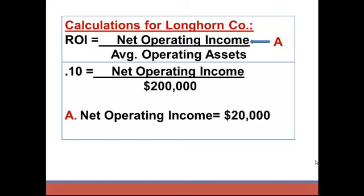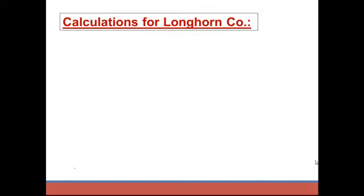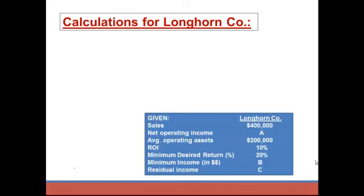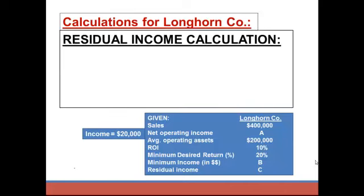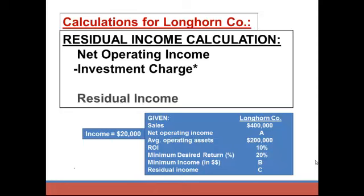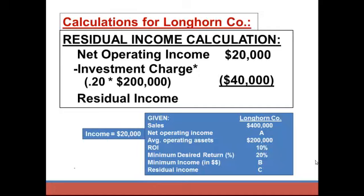Now to solve for B and C — since C is residual income, I'll use that calculation. Recall that we computed income to be $20,000. Residual income is net operating income minus an investment charge, and what's left over is called residual income. We start with the $20,000 net operating income. The investment charge is the minimum desired ROI times the average operating assets: 20% times $200,000, so the investment charge is $40,000.